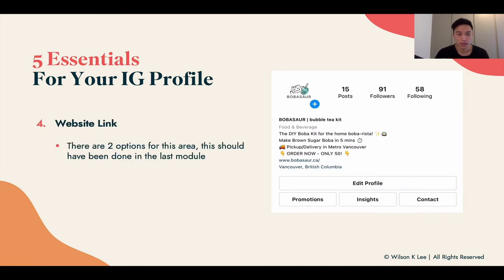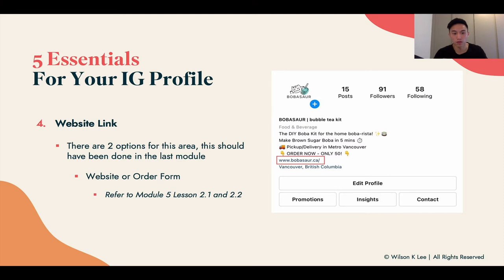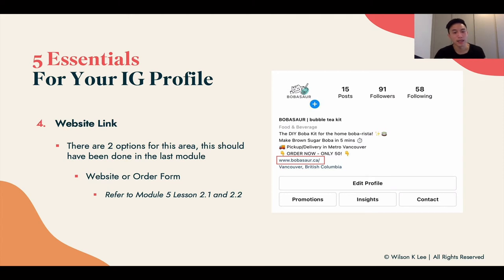Next up, your website link. There are two options for this area, and this should have been done in the last module — module five — where we talked about creating your website or an order form. If you're not aware of that, please jump back to module five, lessons 2.1 and 2.2. Make sure you put in either your website or your order form. I see a lot of Instagram accounts that do not utilize this feature, and if you lose out on it, you're basically losing out on a very important call to action. So make sure you put this in.